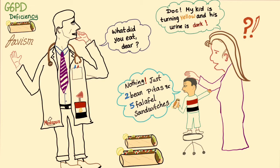Now we have something called favism. Favism is another name for G6PD deficiency. Why is favism related to falafel? Falafel and favism share the same Latin root. In Egypt, we eat beans — which we call 'ful' — and we eat falafel. So with ful and falafel, and favism, of course we are doomed in Egypt.